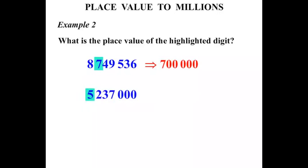This next one, 5,237,000, where the 5 is highlighted. What is it worth? Ones, tens, hundreds, thousands, ten-thousands, hundred-thousands. We've got 5 in the millions place. That's worth 5,000,000.